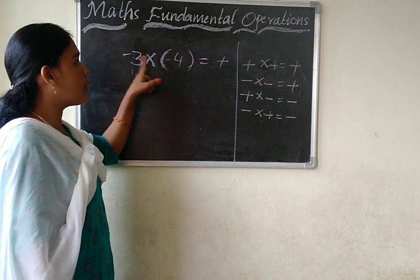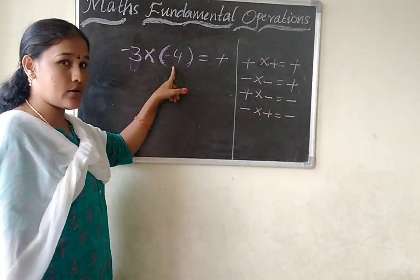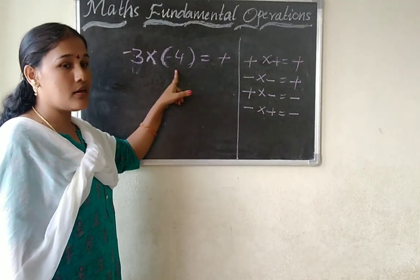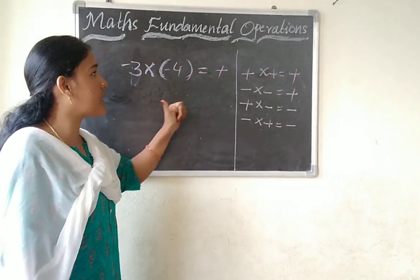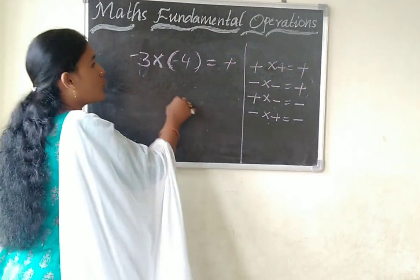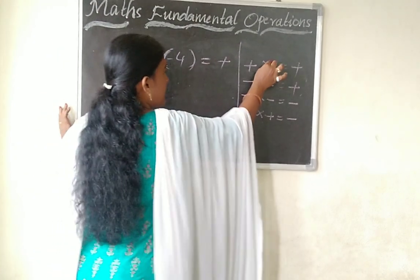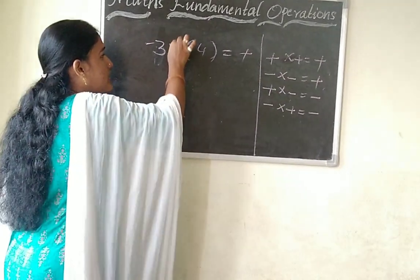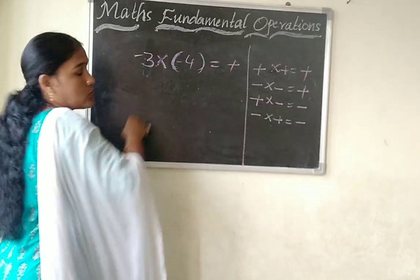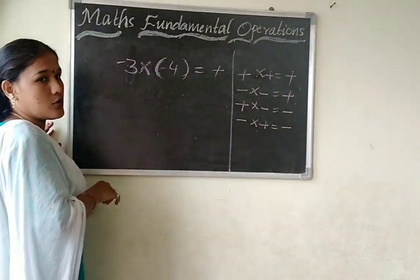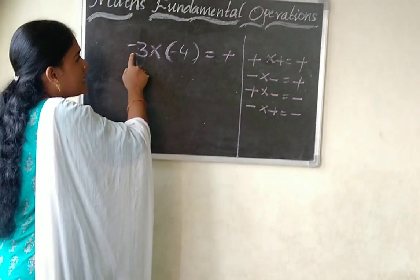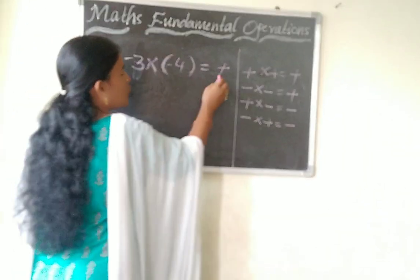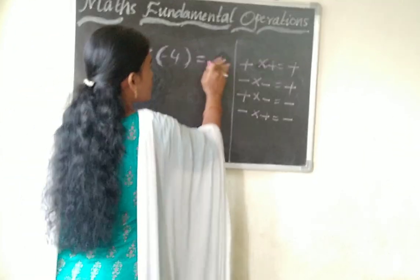2 minus 1, same sign here — 3, 4, 12. Place 12.